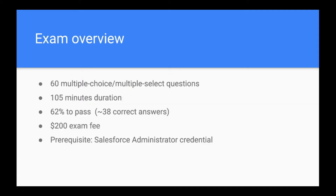Before we go into the modules, let's first cover some high-level points about the exam. It is a 60-question exam — there will be 60 multiple choice or multi-select questions and you have 105 minutes to answer all these questions. At least 62% of questions have to be correct in order to pass the exam. 62% of 60 questions comes to around 37.2, so we can approximate to around 38 answers correct in order to pass.